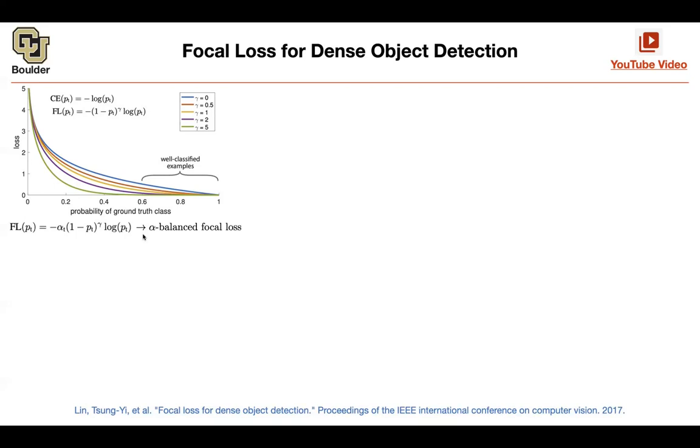Another solution for class imbalance is what you see here, down weighted with another hyperparameter. So whenever something is easy to classify, you're just going to down weight its probability using 1 minus p to the power of gamma. And the bigger gamma, the higher you're down weighting those probabilities. That's the big picture.